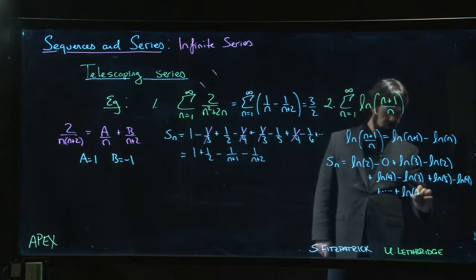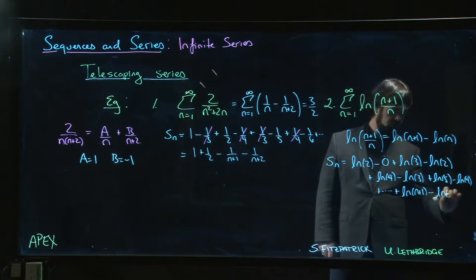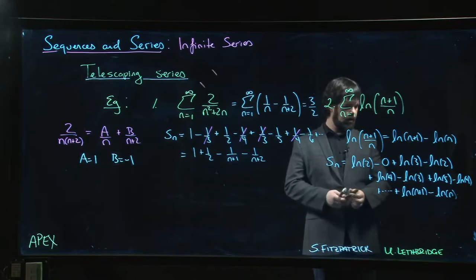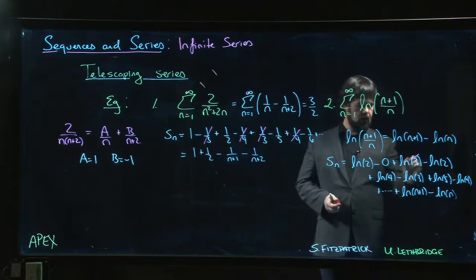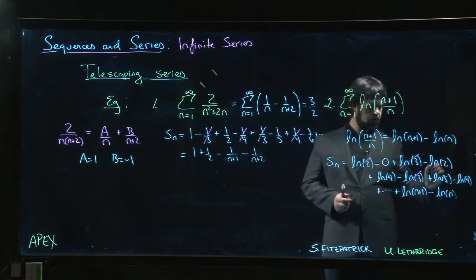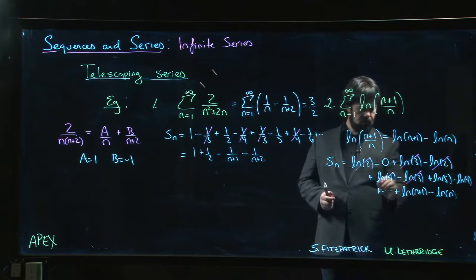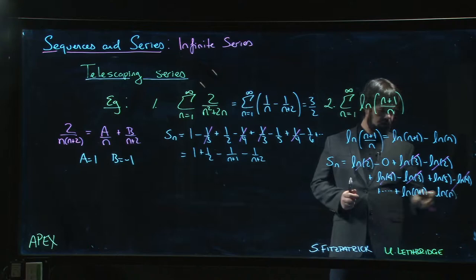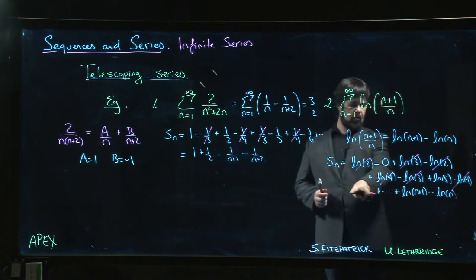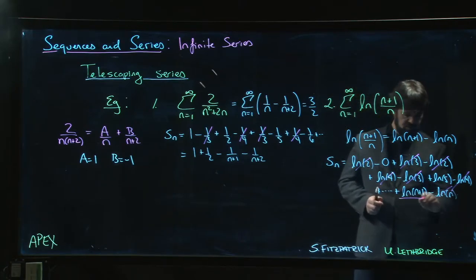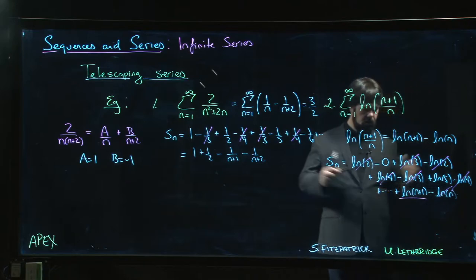Down to log of n plus 1 minus log of n. So, now we look for cancellations. Log 3 cancels with log 3. Log 2 cancels with log 2. Log 4 is going to cancel with log 4. The next term would be log 6 minus log 5. Log 5 cancels. Actually, everything cancels except for that.